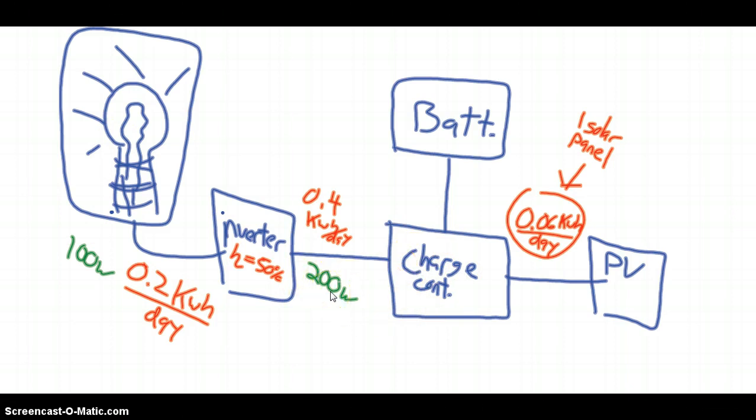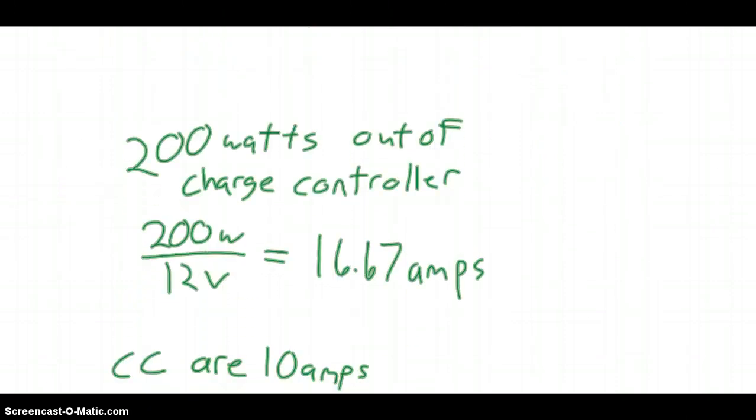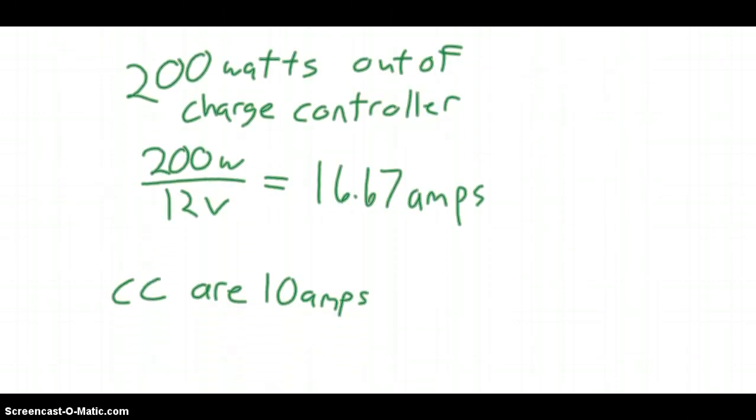Now, in our systems, everything is 12 volts, except for after the inverter. So the charge controller, the battery, the PV panel, everything here before the inverter is 12 volts. So that's what we're going to assume. So the first thing we're going to figure out is how many charge controllers do we have to buy. So if we have 200 watts out of the charge controller, that's 16.67 amps. And our charge controllers are 10 amps, and I didn't write it here, but you'd have to buy two charge controllers.